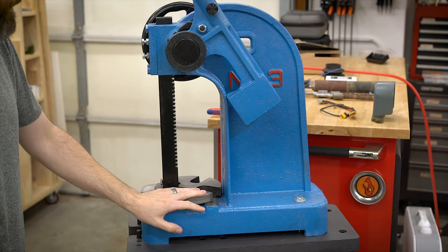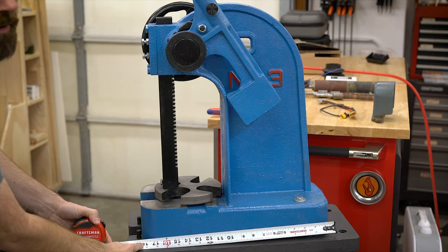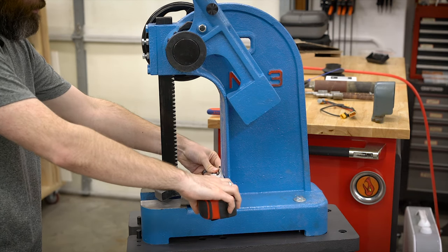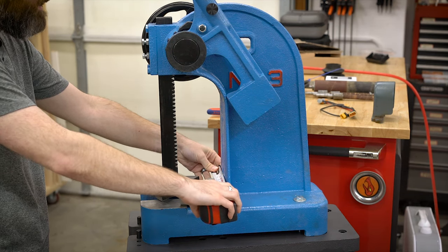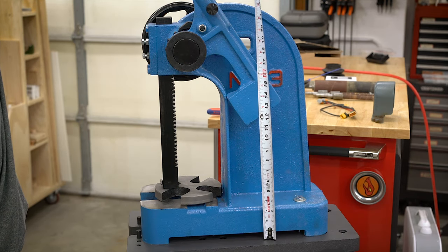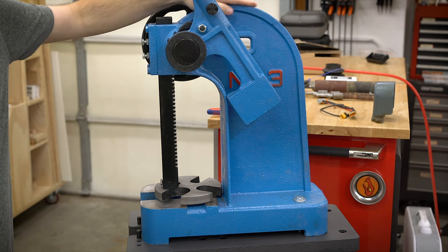So I'm going to start with some basic dimensions. From front to back, you're looking at about 18 inches. The actual width of the press at the widest is about a little under 8 inches. And from the base to the top, up to about here, you're looking at 22 inches.